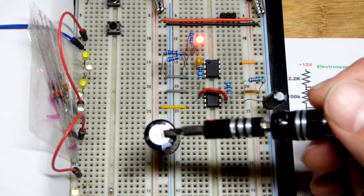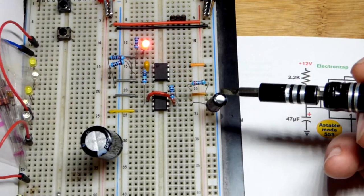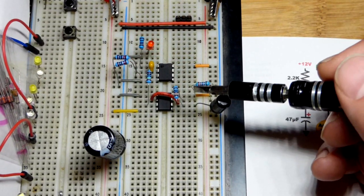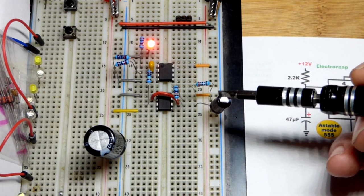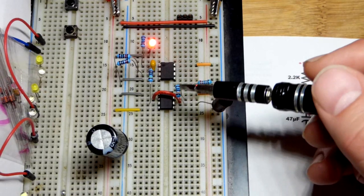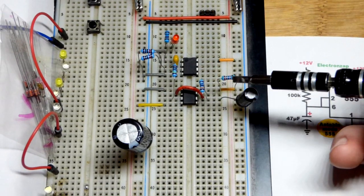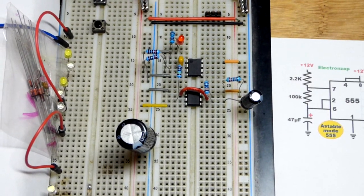It's in A-stable mode. This capacitor just steadies the supply voltage. But we got 2.2k, and then a 100k resistor to charge the 47 microfarad capacitor, and then it discharges through the 100k resistor right there to set the A-stable timing.